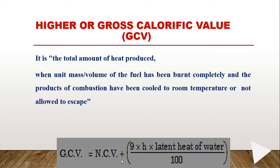How to determine the gross calorific value? GCV is equal to NCV plus 9 times H times the latent heat of water, divided by 100. Here, H is the percentage of hydrogen in the fuel required for combustion.